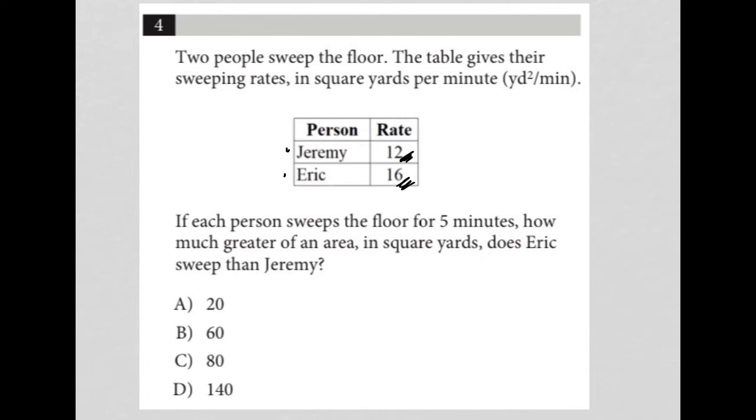Okay, so this is pretty straightforward because we know these rates are in per minute. So Jeremy, who's sweeping at a rate of 12 yards per minute, if he were to sweep for five minutes, we just multiply that by five.